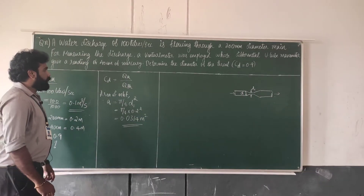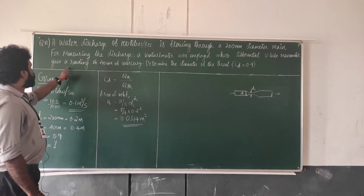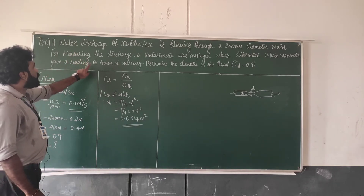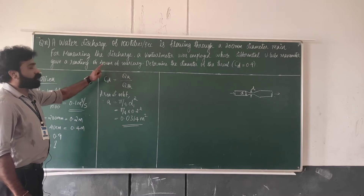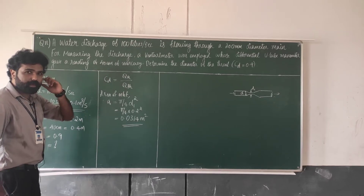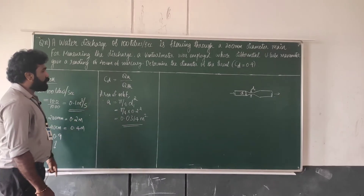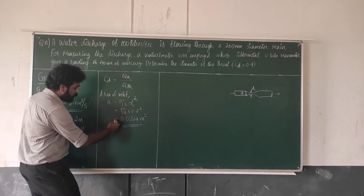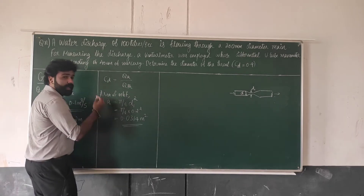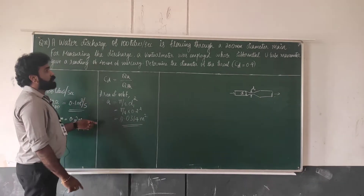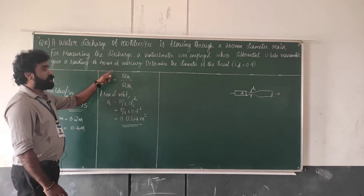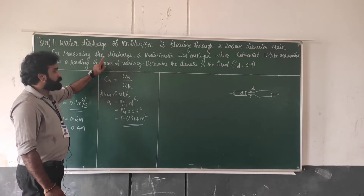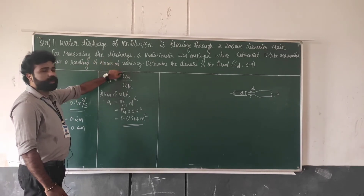Next, we calculate the differential head H. The reading of mercury is 40 cm. That is to be expressed in equivalent meters of water. Since mercury is denser than water, it is the heavier liquid in the U-tube manometer, and water is the liquid flowing in the pipe.